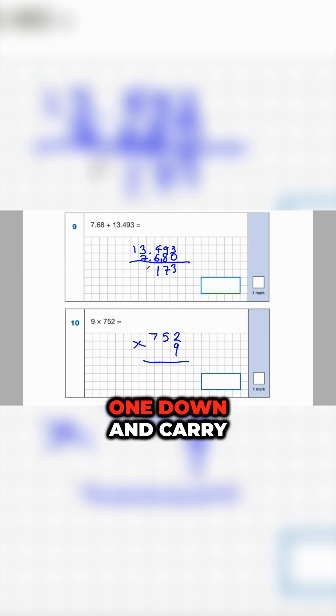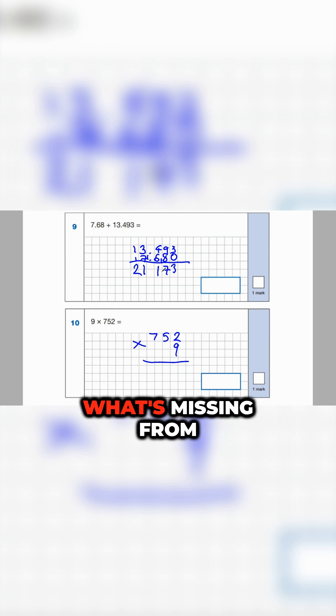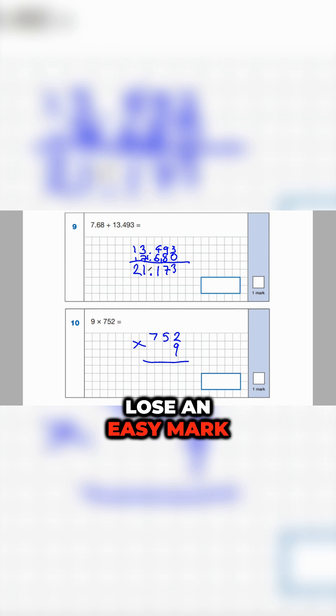Okay, what's missing from our answer? You guessed it, the decimal point. We need to put that in at the end. A lot of children forget that and will lose an easy mark just because they didn't put the decimal point in. Let's write the answer in the box: 21.173. There's nine times.